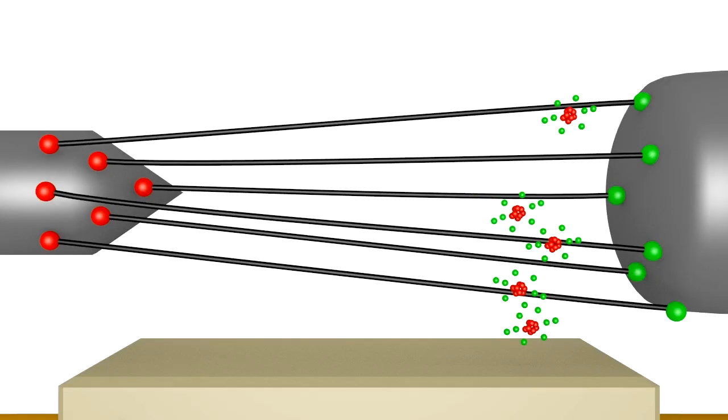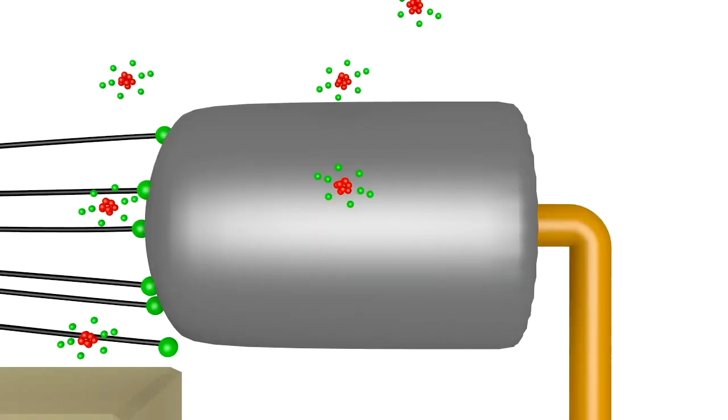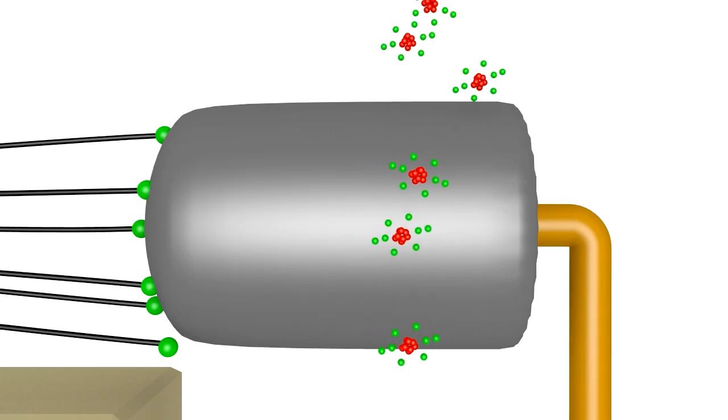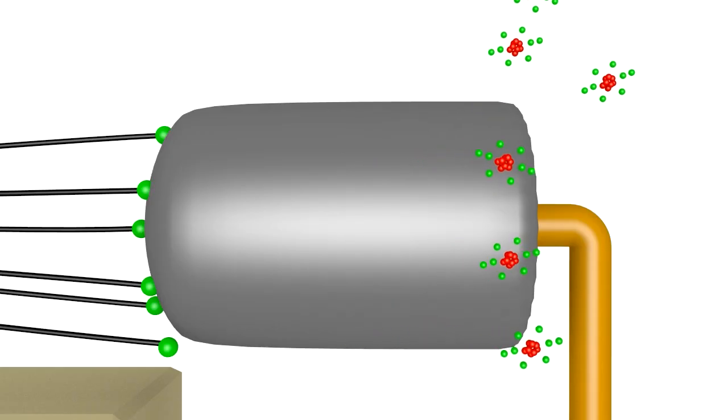Some of those neutral atoms will collide with other ones, and the overall direction will become pretty random and end up as heat. But many will also continue moving in this direction, or may collide with others which will move in that direction. Since they're neutral, they won't interact with the device. That's the ion wind, even though much of it isn't ions.